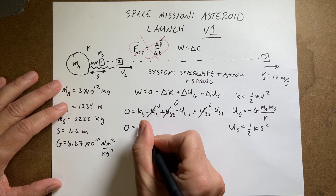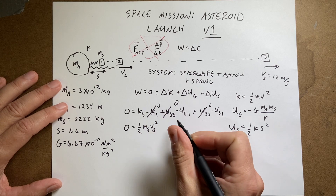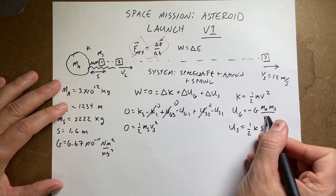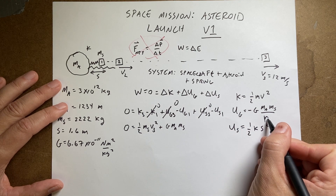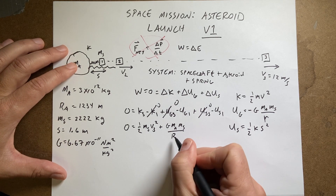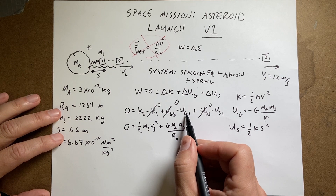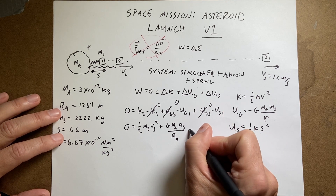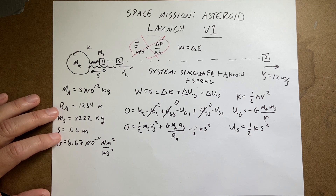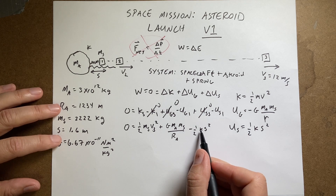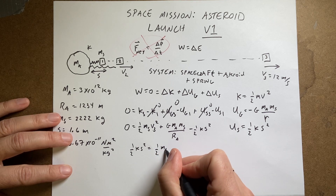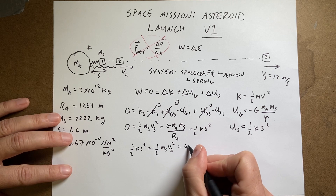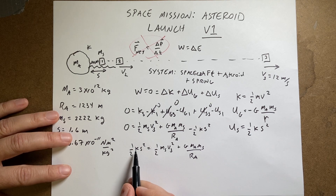So I have: zero equals one-half times mass of the spacecraft times V3 squared, minus UG1. But UG1 has a negative sign there, so I write plus G times mass of the asteroid times mass of the satellite over RA, where RA is the radius of the asteroid. Then I have minus the spring potential energy at the beginning, which is minus one-half K S squared. I want to find the spring constant, so I move that term to the other side: one-half K S squared equals one-half MS V3 squared plus G times MA times MS over RA.